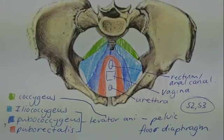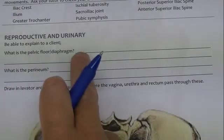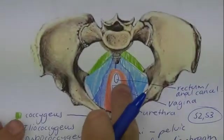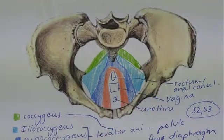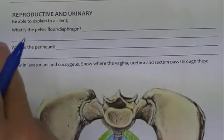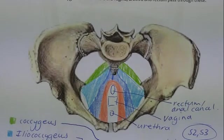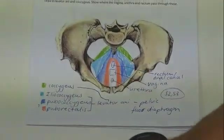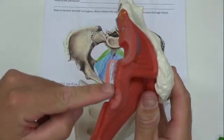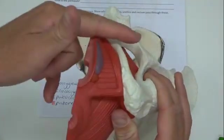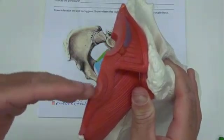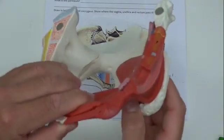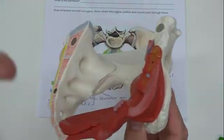To summarize: the pelvic floor diaphragm is a deep set of muscles responsible for resisting changes in intra-abdominal pressure and supporting reproductive and pelvic organs. The perineum, on the other hand, is a superficial set of muscles organized into the urogenital and anal triangles, with primarily voluntary control of waste management through the external anal sphincter and external urinary sphincters.